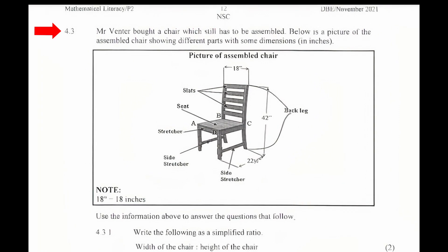Question 4.3. Mr. Fenter bought a chair which still has to be assembled. Below is a picture of the assembled chair showing different parts with some dimensions in inches. We are given a note that states that 18' equals 18 inches. Use the information above to answer the questions that follow.